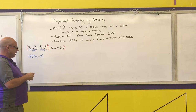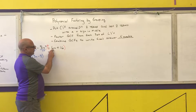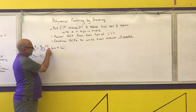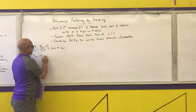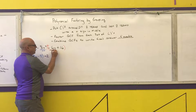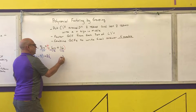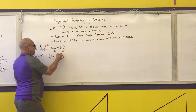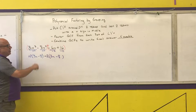Then do the same thing for the second group. The biggest number that goes into 6 and 16 is 2. And since the first term is negative, I pull out negative 2. After division, negative 6 divided by negative 2 is positive 3n, and 16 divided by negative 2 is minus 8.